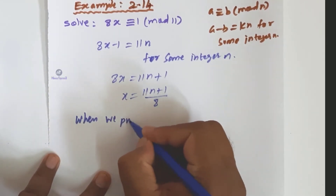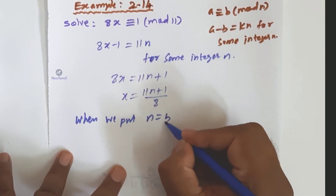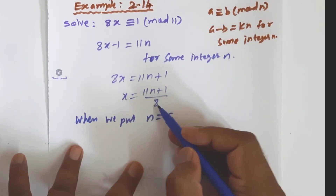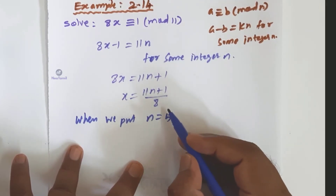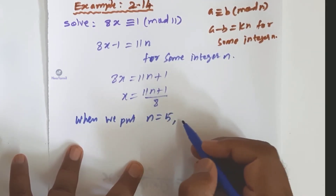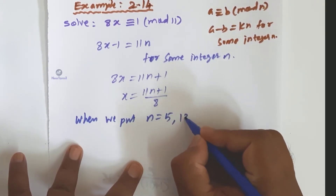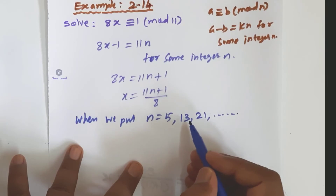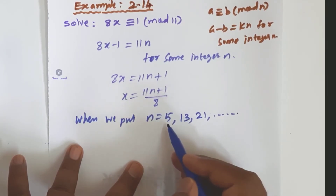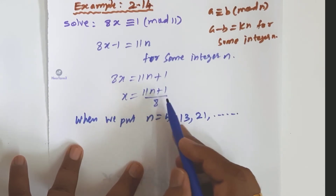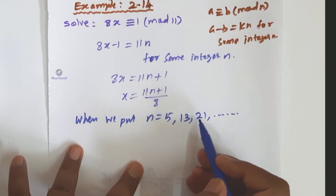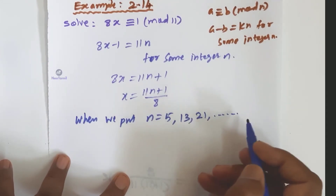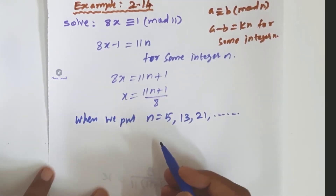When n equals 5: 11 times 5 plus 1 equals 56, and 56 divided by 8 equals 7. So n equals 5 works. For the next values, we add 8 each time: n equals 5, then 5 plus 8 equals 13, then 13 plus 8 equals 21. So the suitable values of n are 5, 13, 21, and so on — all giving 11n plus 1 divisible by 8.